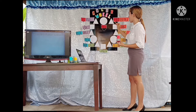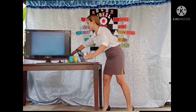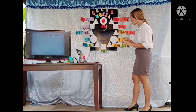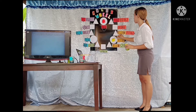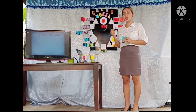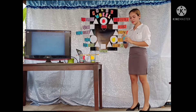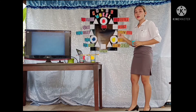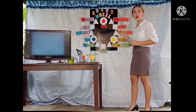Let us put the color red here. There is no mixing needed. Next is yellow. The yellow goes here. What is the last primary color, class? Blue. We will put the blue here. Are all the primary colors already in the chart? Yes. Red, blue, and yellow are already here.